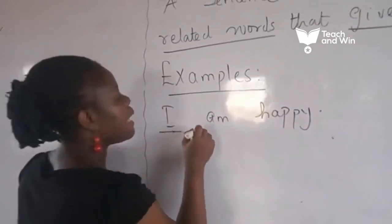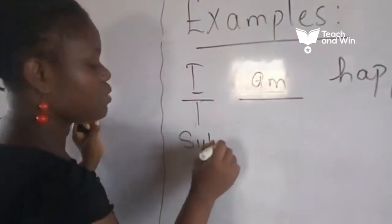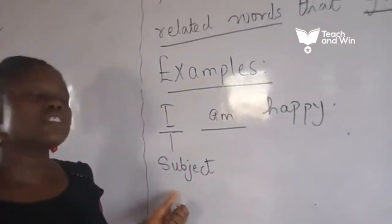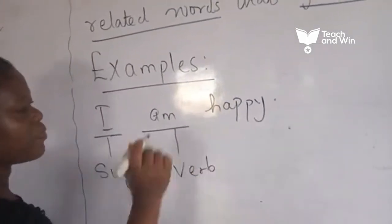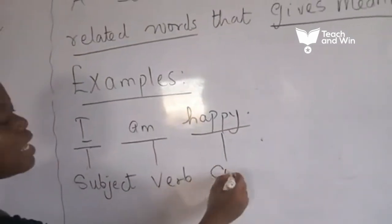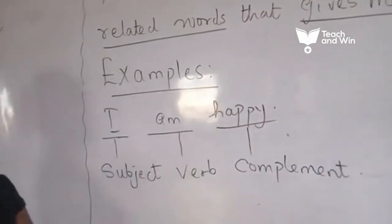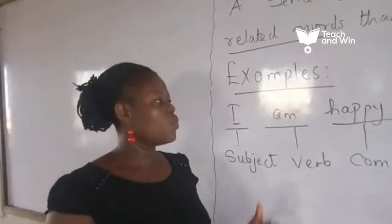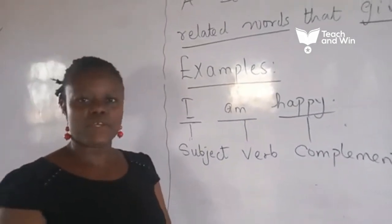'I' relates to the verb 'am'. 'I' in the sentence is the subject. The subject of the sentence is a person or thing spoken about in the sentence. 'I am happy' — this is an example of a sentence. Next class we will take a look at other examples of sentences and their relatedness in giving meaning. Thank you.